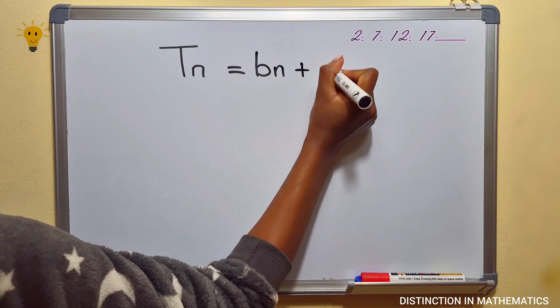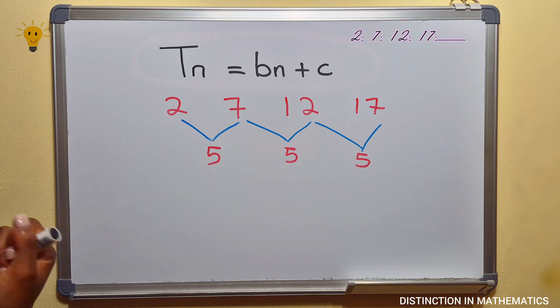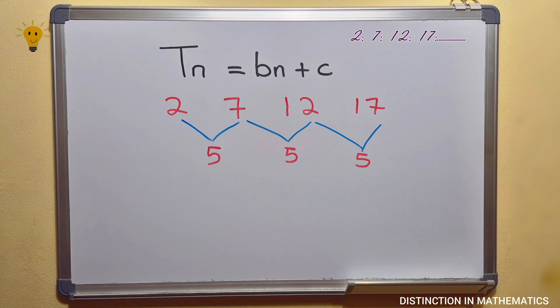On your exam, they can ask you to determine the nth term of this sequence. What you're going to do is use the general term for linear number patterns, which is Tn equals bn plus c. We're already looking for the nth term. What we need to find is the value of b and c.